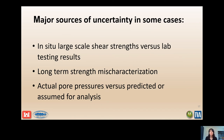Some major sources of uncertainty to consider in slope stability analysis are in-situ large-scale shear strengths versus lab testing results and the limitations there, long-term strength mischaracterization and how strength changes over time, and actual pore pressures versus predicted or assumed values for analysis.